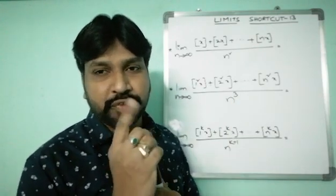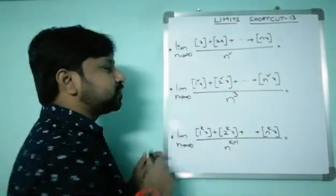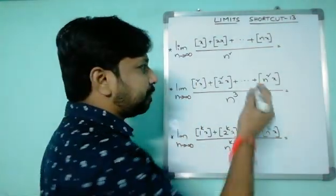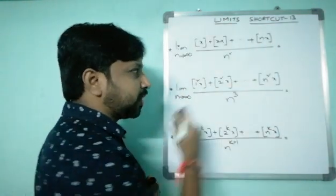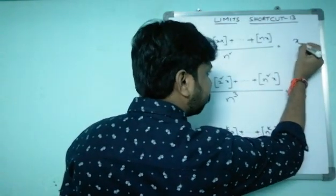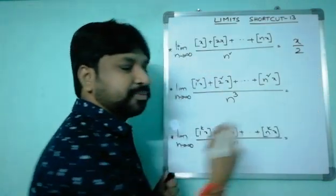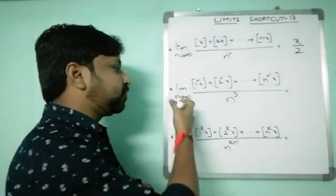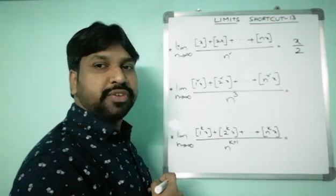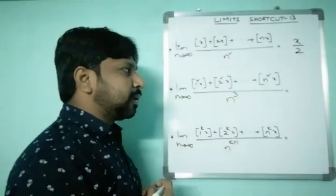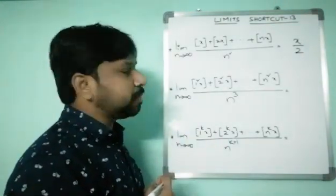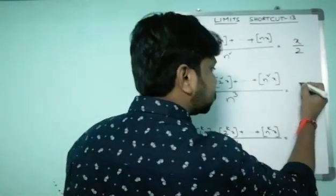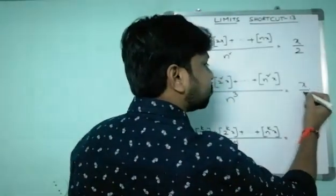Look at this carefully. The limit as n tends to infinity of bracket X plus bracket 2X plus so on plus bracket NX, whole divided by N squared — the answer is simply X by 2, within one second. For the second question: the limit as n tends to infinity of bracket 1-squared X plus bracket 2-squared X plus so on plus bracket N-squared X, divided by N cubed — the answer is simply X by 3.